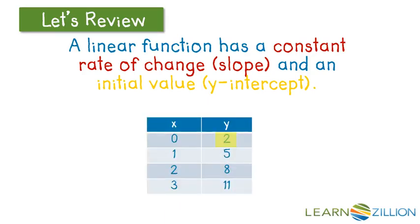If we see this in a table of values or a numeric representation, the initial value is going to be the y value when x is 0, and we can use first differences to identify the value of the slope, which is 3.